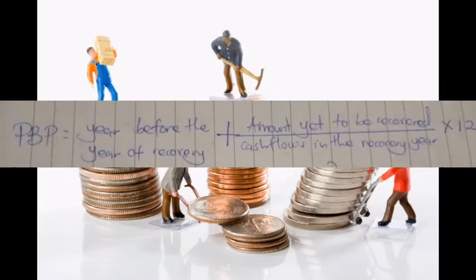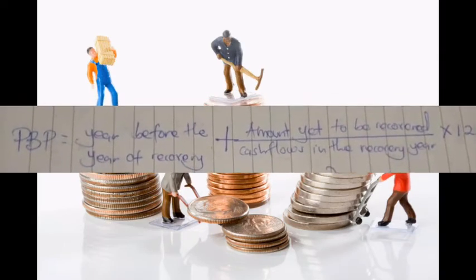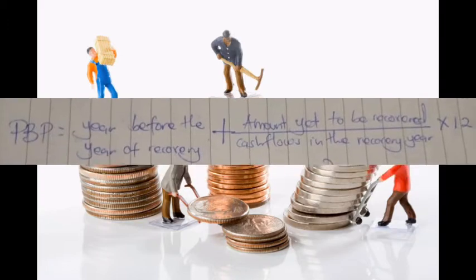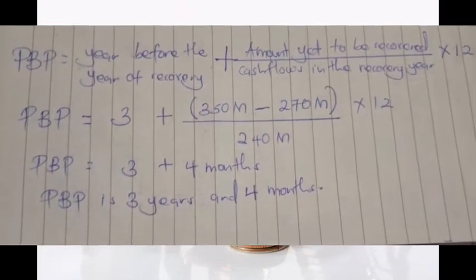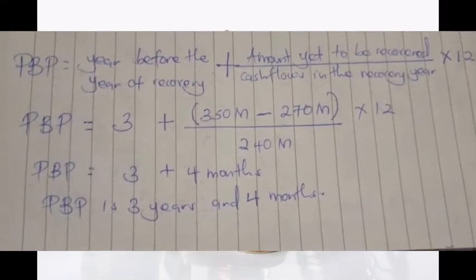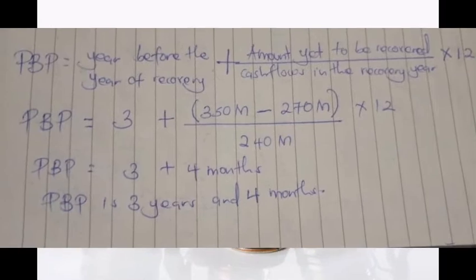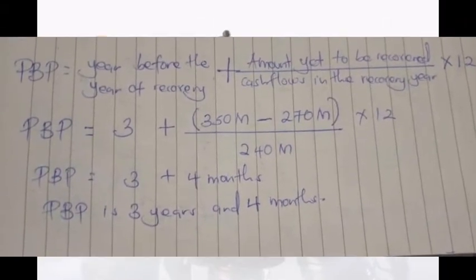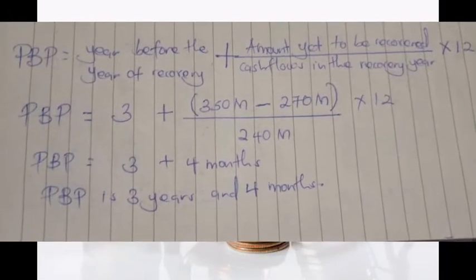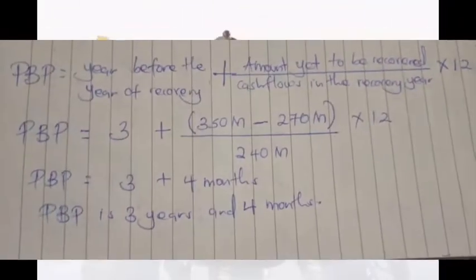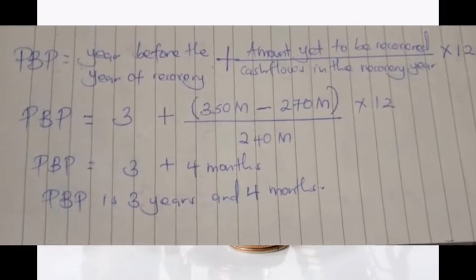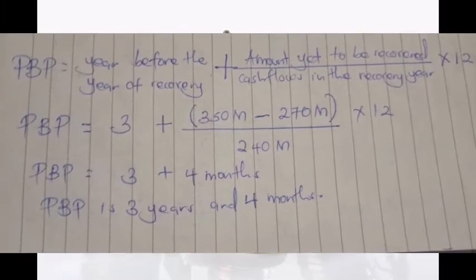Using the formula — payback period equals year before the year of recovery, plus amount yet to be recovered divided by cash flows in the recovery year, times 12 months — we substitute: the year before recovery is year 3 (with 270 million recovered); amount yet to be recovered is 350 million minus 270 million; cash flows in the recovery year (year 4) are 240 million. Calculating: 3 plus 4 months, giving a payback period of 3 years and 4 months.